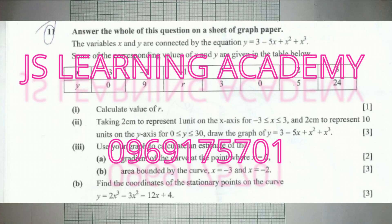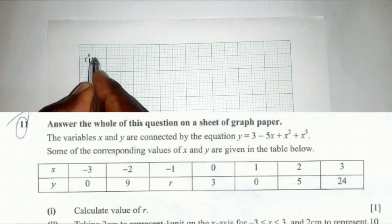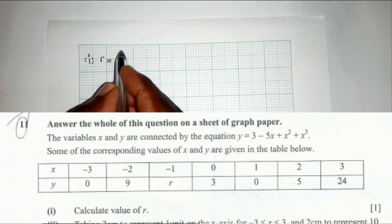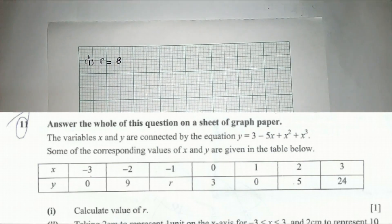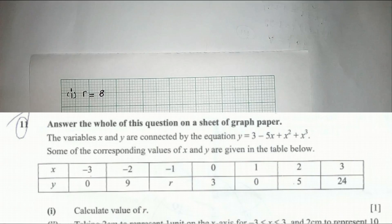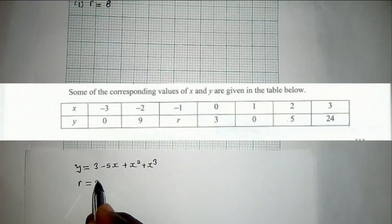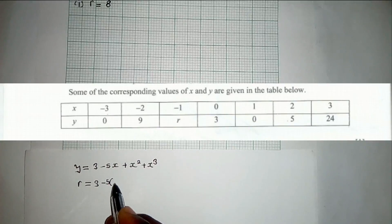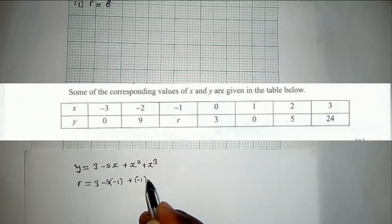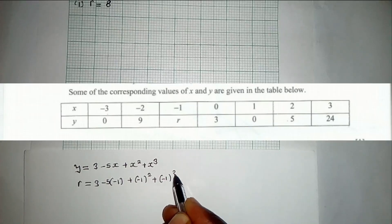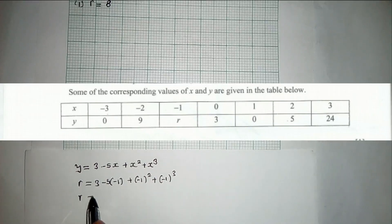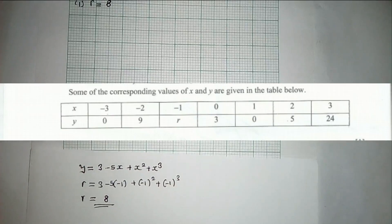For question one, we've been asked to find the value of r. So r is equal to 8. How did I find 8? Under the x-axis there is negative 1, and under the y-axis there is r, which is what we are looking for. You put negative 1, plus negative 1 squared, plus negative 1 cubed — punch all these values on your calculator and you find that r is equal to 8.